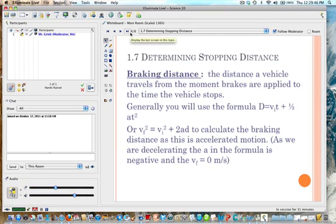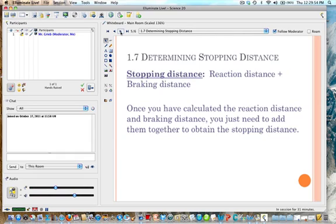And you can also say that the final velocity if you're talking about braking distance is going to be zero because you're coming to a stop. Alright, so to determine the stopping distance, you're going to take the reaction distance plus the braking distance. So once you've calculated the reaction distance and the braking distance, you add them together and you have your stopping distance.